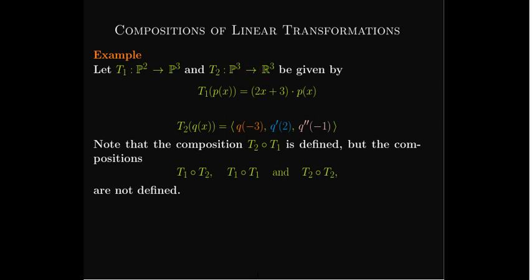However, if we go the other direction, T1∘T2 is not defined: doing T2 first gives output in R3, which is not a valid input to T1. Similarly, T1 composed with itself is not defined because T1's output is a polynomial in P3, but T1 only accepts polynomials in P2. And T2 composed with itself is not defined either, since T2 outputs a Euclidean vector in R3 but needs a polynomial as input. So those other compositions are not defined.